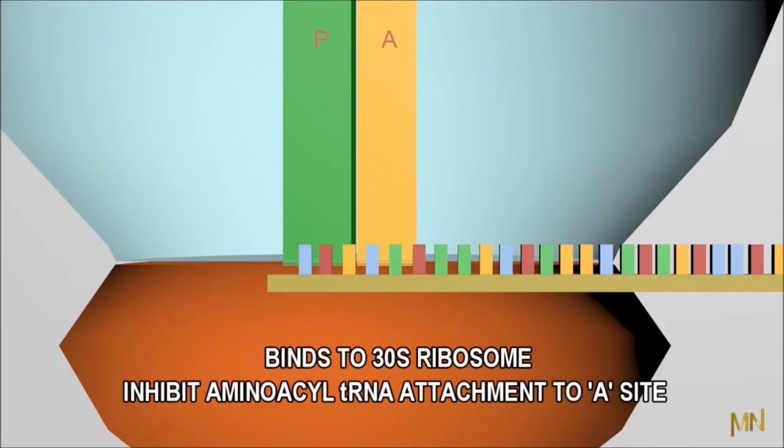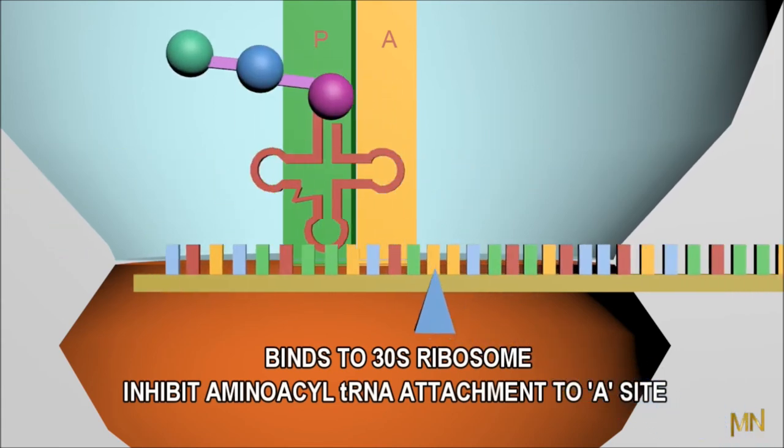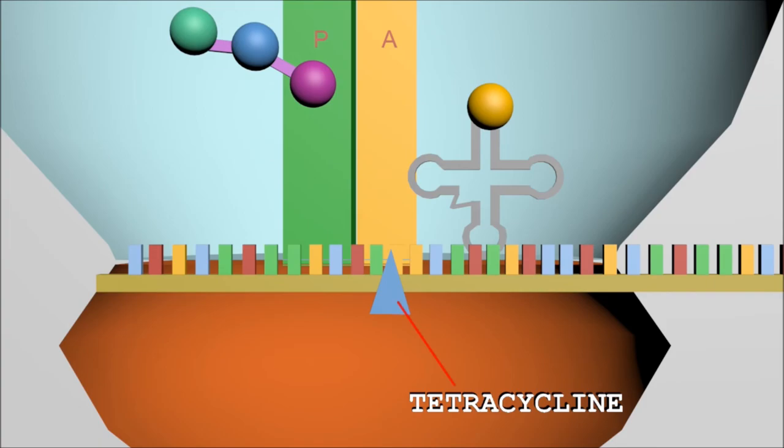Whereas, the tetracycline binds to 30S ribosome and inhibits aminoacyl tRNA attachment to the A site, leading to A site attachment inhibition.